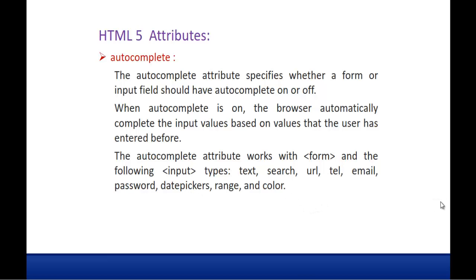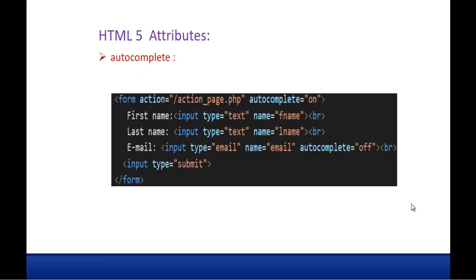Let me show you a demo of the Auto-Complete attribute. Here is a simple example I am going to code in Visual Studio Code. You can observe first name, last name and email. To the form tag I have specified Auto-Complete on, meaning anything inside this form tag will have Auto-Complete on. But explicitly to the email input I have specified Auto-Complete off.